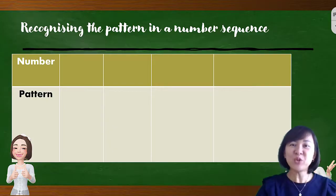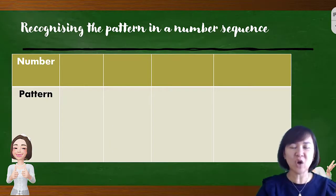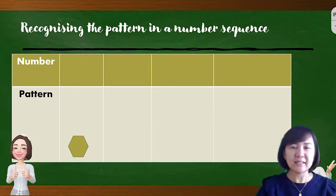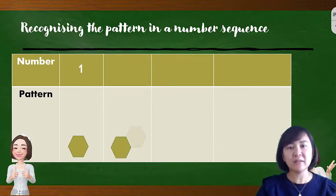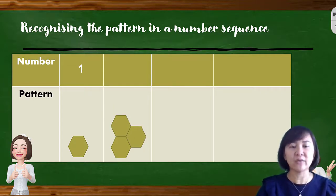Let me show you an activity before we proceed to the definition of sequence: recognizing the pattern in a number sequence. We are given a hexagon, which we can label as 1. So we state it as 1 hexagon. The next pattern is 3 hexagons.